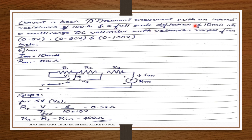Next problem: convert a basic D'Arsonval movement with internal resistance of 100 Ω and full-scale deflection of 10 mA into a multi-range DC voltmeter with ranges 0–5 V, 0–50 V, and 0–100 V. Given: I_m = I_FSD = 10 mA, R_m = 100 Ω. The circuit shows resistors R1, R2, R3 in series, where V1 uses R3+R_m, V2 uses R2+R3+R_m, and V3 uses R1+R2+R3+R_m.